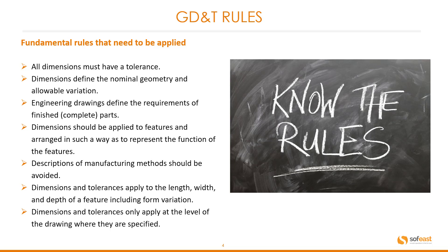There are a number of fundamental rules that need to be applied with GD&T. All dimensions must have a tolerance. Dimensions define the nominal geometry and allowable variation. Engineering drawings define the requirements of finished complete parts. Dimensions should be applied to features and arranged in such a way as to represent the function of the features. Descriptions of manufacturing methods should be avoided. Dimensions and tolerances apply to the length, width and depth of a feature including form variation. Dimensions and tolerances only apply at the level of the drawing where they are specified.